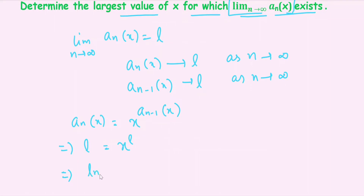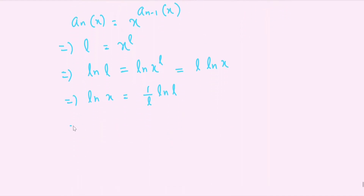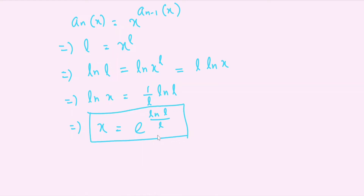Taking log of both sides: ln(L) = L·ln(x), which implies ln(x) = ln(L)/L. Therefore x = exp(ln(L)/L).